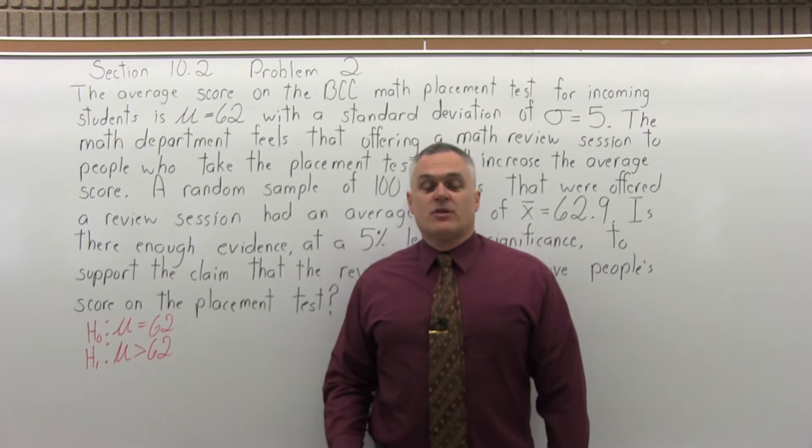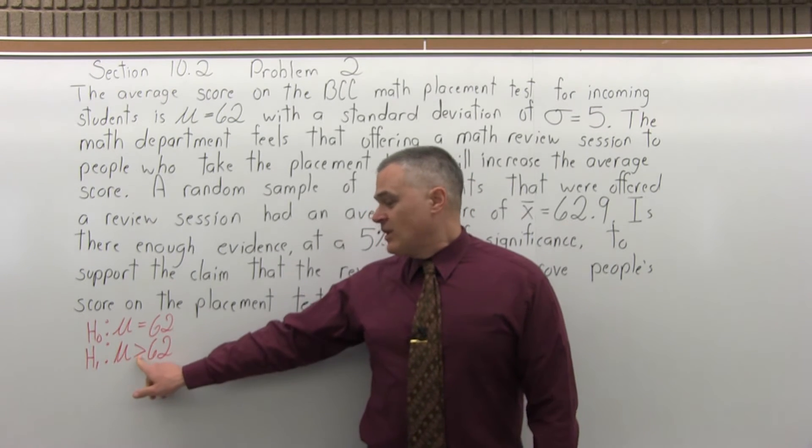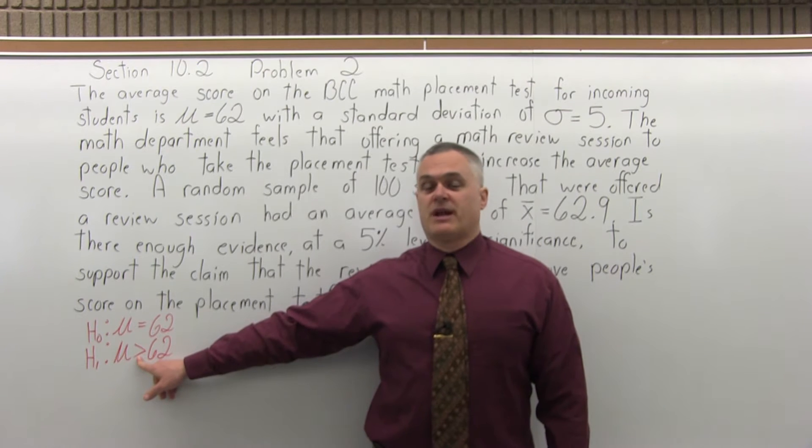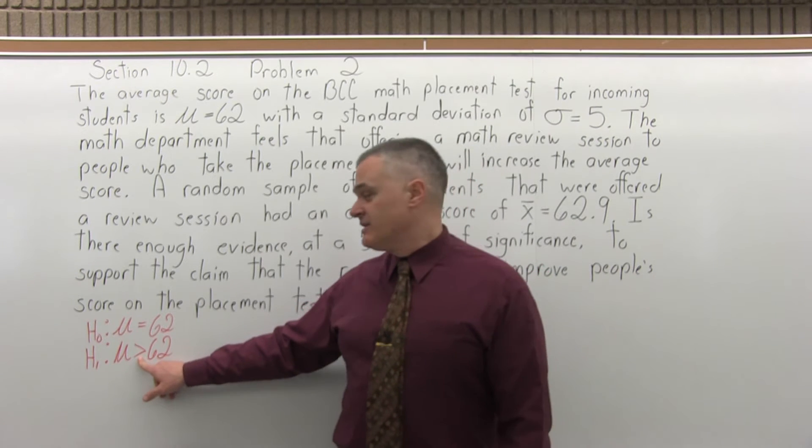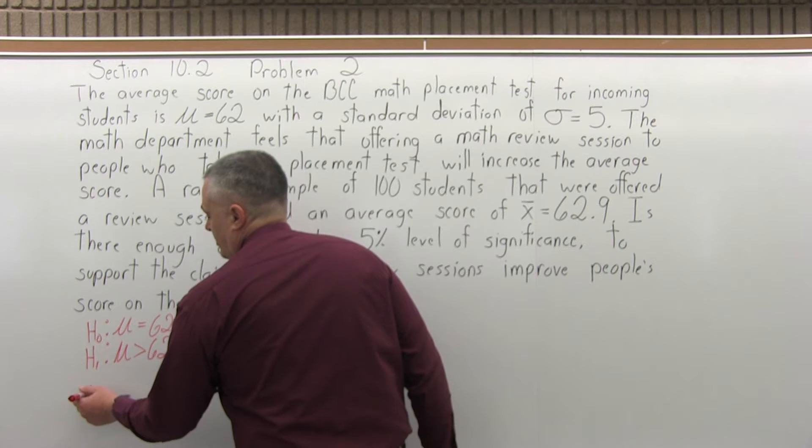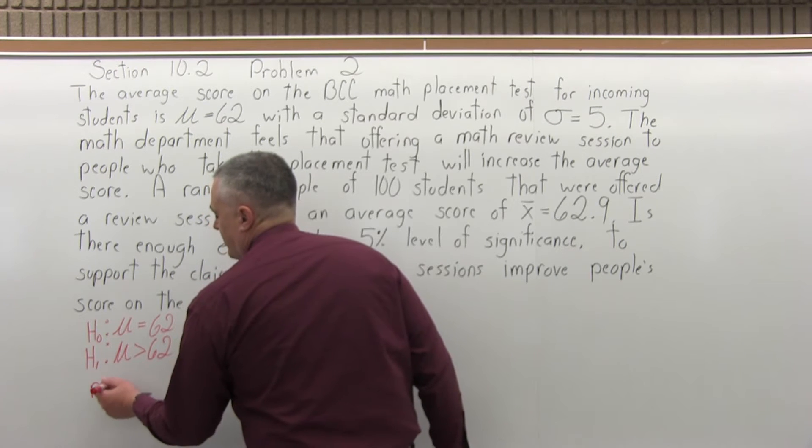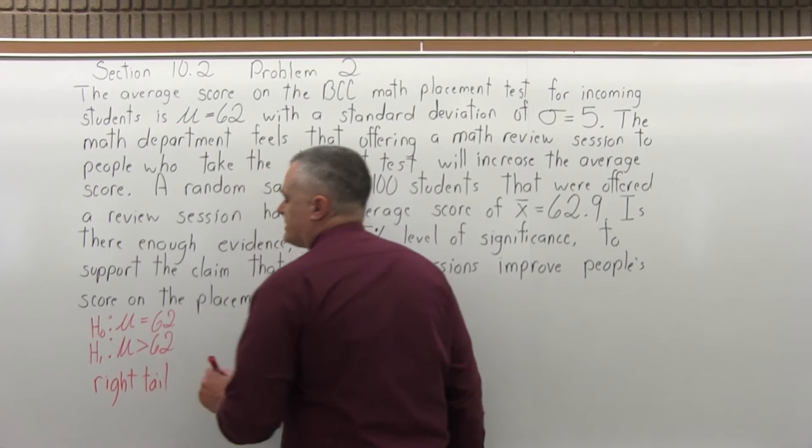Step three, determine if it's a left tail, right tail, or two tail test. To determine that, look at the symbol in your alternate hypothesis and see which direction it points in. This has a greater than symbol which points to the right, so this is a right tail test. The type of test is the same direction that your inequality symbol points to in your alternate hypothesis. So this is right tail. That was step three.